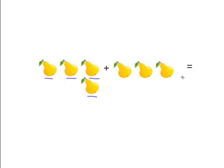We have four pears. And on this side, we have one, two, three pears. Four pears plus three pears equals how many pears? Let's write seven pears.